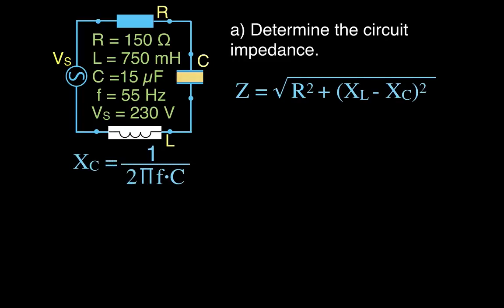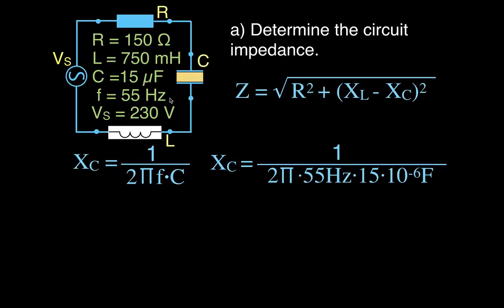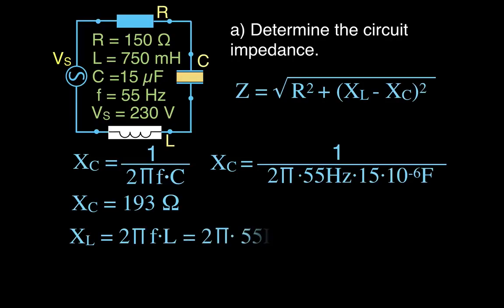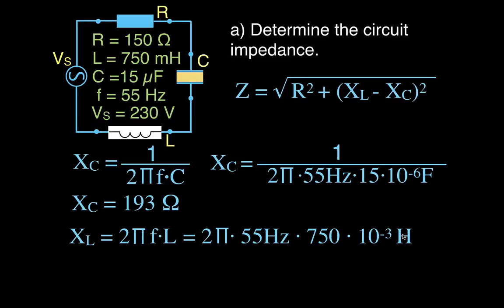We don't yet know the capacitive or inductive reactance, so we'll calculate those first. The capacitive reactance XC equals 1 divided by 2π times frequency times capacitance: 1 divided by 2π times 55 Hz times 15 microfarads, giving XC = 193 ohms. The inductive reactance XL equals 2π times F times L: 2π times 55 Hz times 750 millihenry, giving XL = 259 ohms.